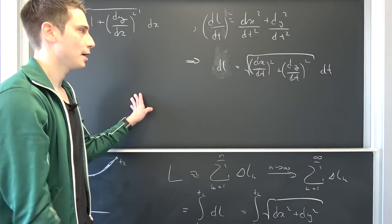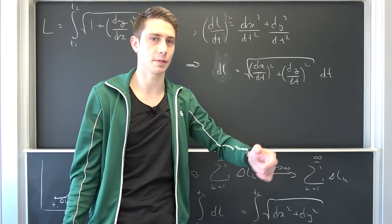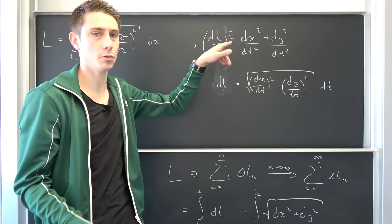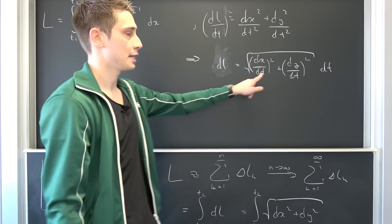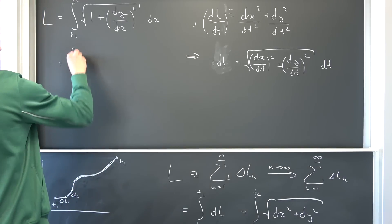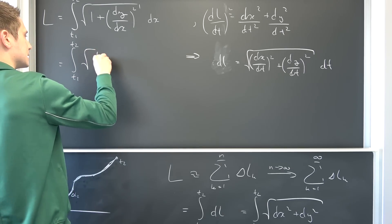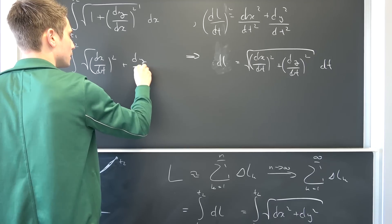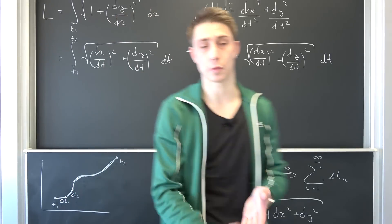What we basically did: we have parameterized this equation right here using, for example, time segments. So we want to fit time-dependent functions into here, where our coordinates change over time. That's what you have with polar coordinates, for example. So we can plug this into here instead of our dL that we had originally. Now we are going to get the square root of (dx/dT) squared plus (dy/dT) squared, integrated with respect to T.